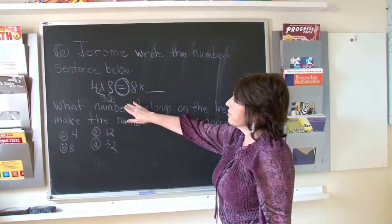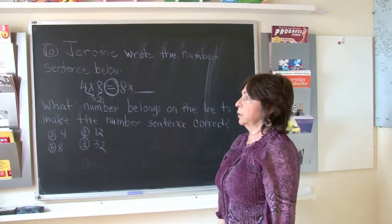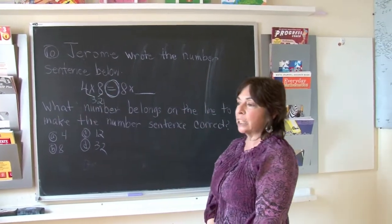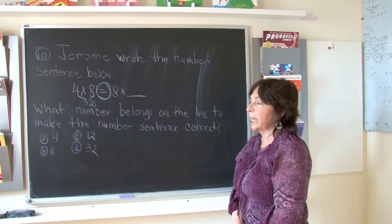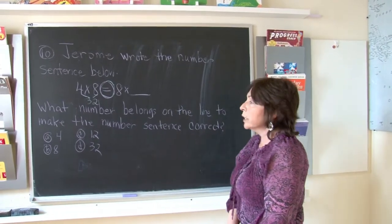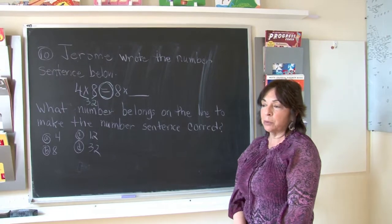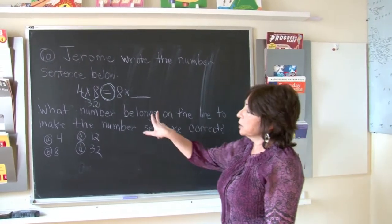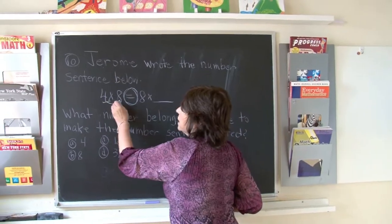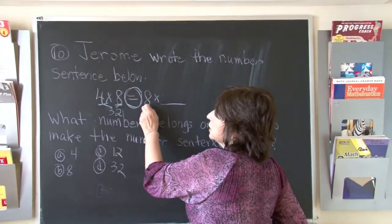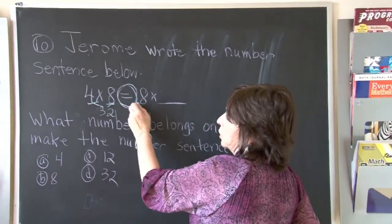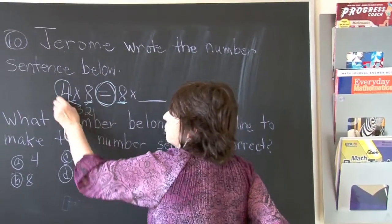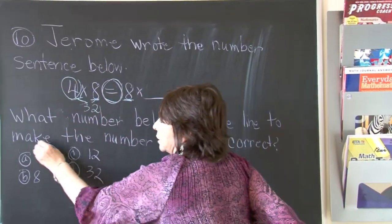So we have to have this side equal 32, which means we need the two same numbers. Because the commutative property of multiplication says the order of the numbers does not matter — we're going to get the same answer. So what number is missing? I have a 4 and I have an 8. On this side of the equation, I only have an 8. So the number that is missing is 4, and therefore the correct answer is A: 4.